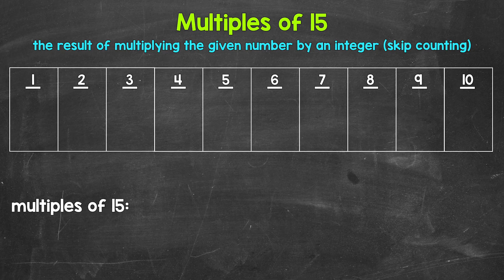Another way to think about multiples is to skip count. So all of the numbers something is going to hit when counting up by that number — those are all going to be multiples.